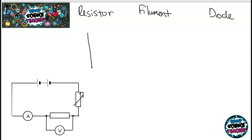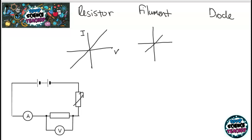For a resistor, you get a completely straight line with voltage on the x-axis and current on the y-axis. For a filament bulb, the graph curves because as the bulb is left on longer, temperature increases inside it — the higher the voltage, the higher the resistance, so it flattens out. For a diode, because current can only flow in one direction, you only get a positive line, and it only flows above a certain voltage.